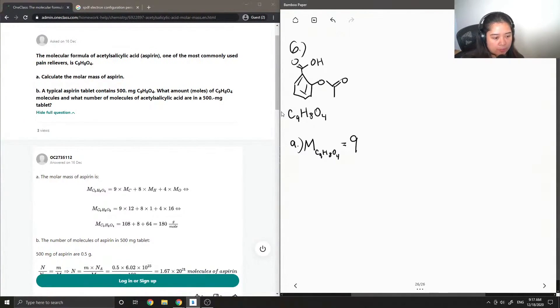to find it, it would just be 9 times the molar mass of carbon, plus 8 times the molar mass of hydrogen, plus 4 times the molar mass of oxygen.